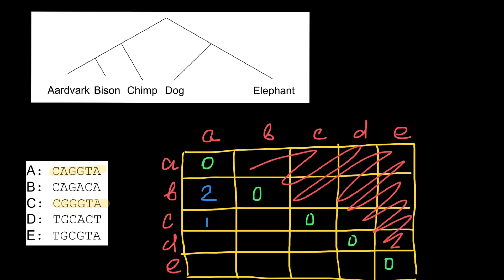So let's put one here. Now we're comparing species A and D. First nucleotide: difference; two, three, four, five, six. So these two species are different in all six nucleotide positions. Now let's compare species A and E: one, two, three differences, and the rest are the same. So let's put three in this cell.